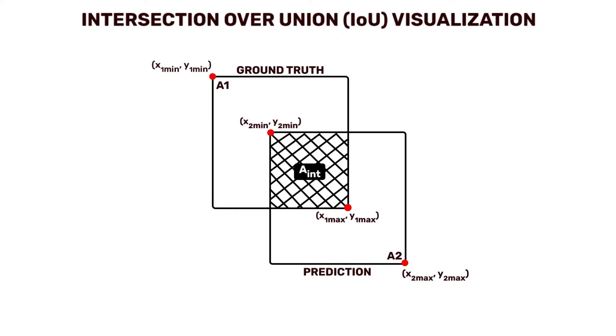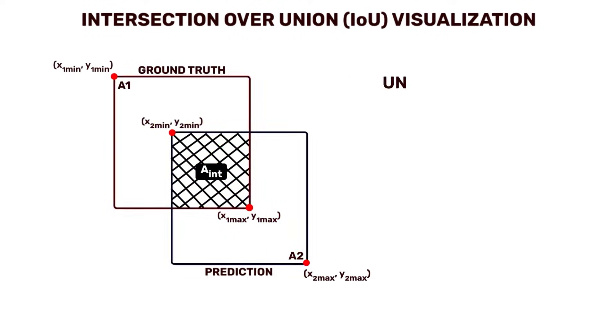Area of intersection is the intersection of A1 and A2. The union can be expressed as A1 plus A2 minus area of intersection.